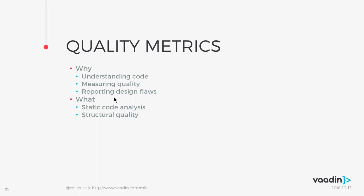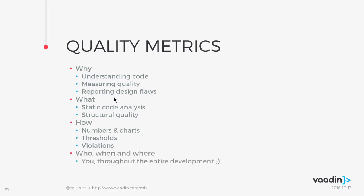Quality metrics measure the quality of your code. Static code analysis and structural quality tell you how good or bad your code is. The results can be shown as numbers or charts, and for many metrics there are thresholds — values that, if exceeded, indicate serious problems. Metric violations can be set for certain projects, and when you encounter one, you have to do something about it.